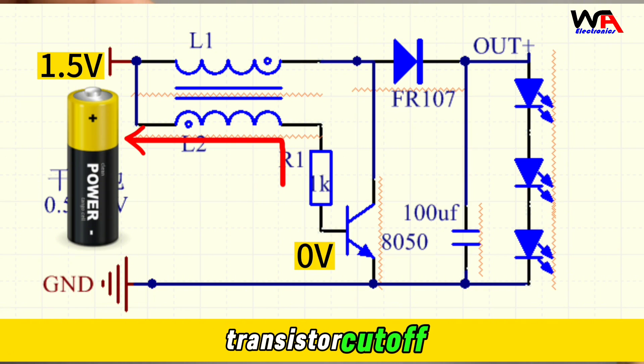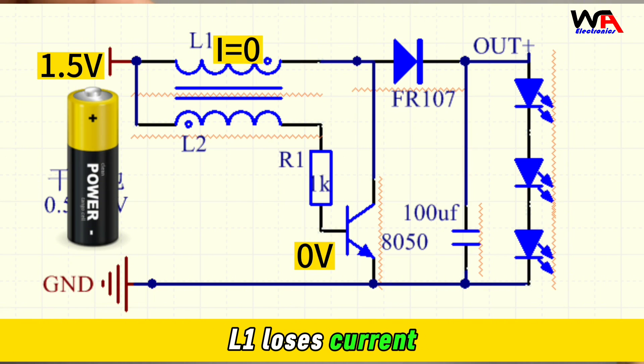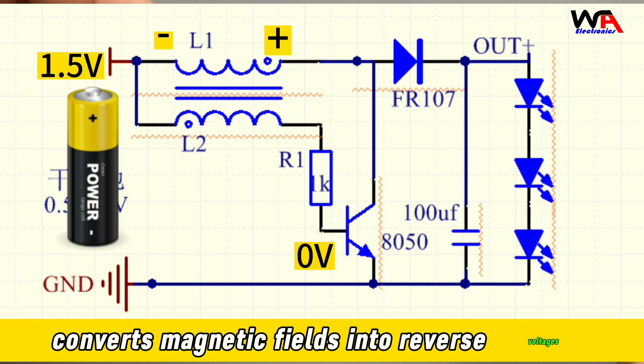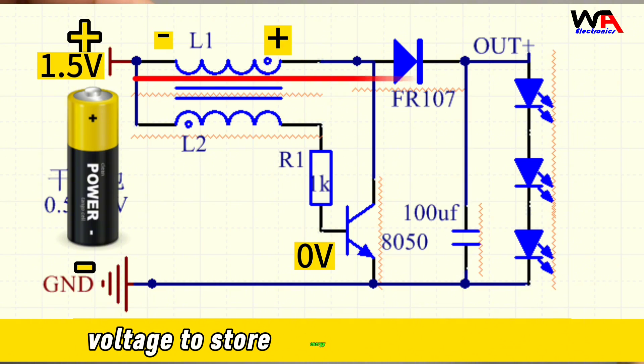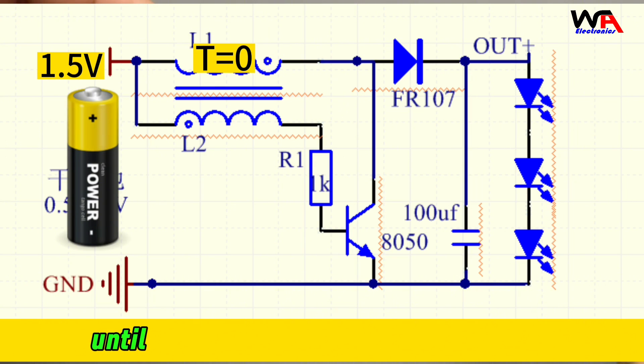The transistor cuts off and L1 loses current. Simultaneously, it converts the magnetic field into reverse voltage. This voltage is superimposed on the battery voltage to store energy in the capacitor until the L1 magnetic field reaches zero.